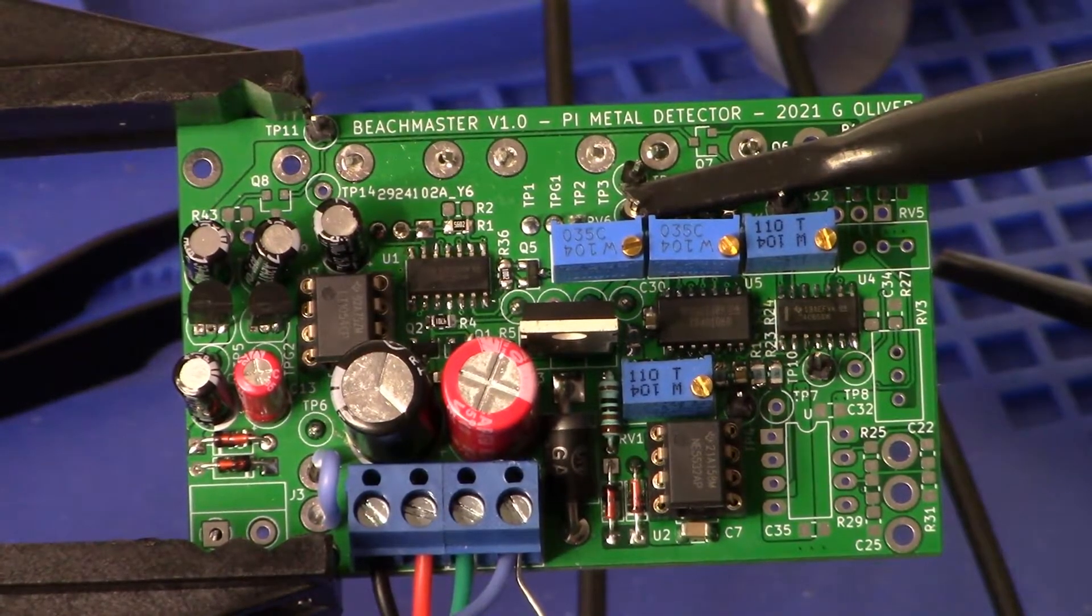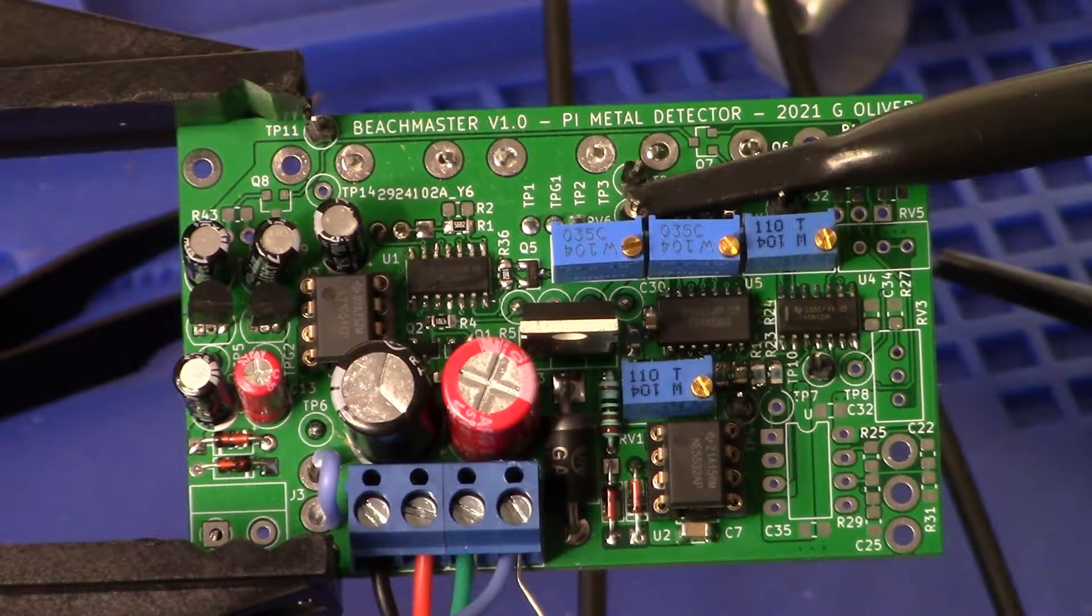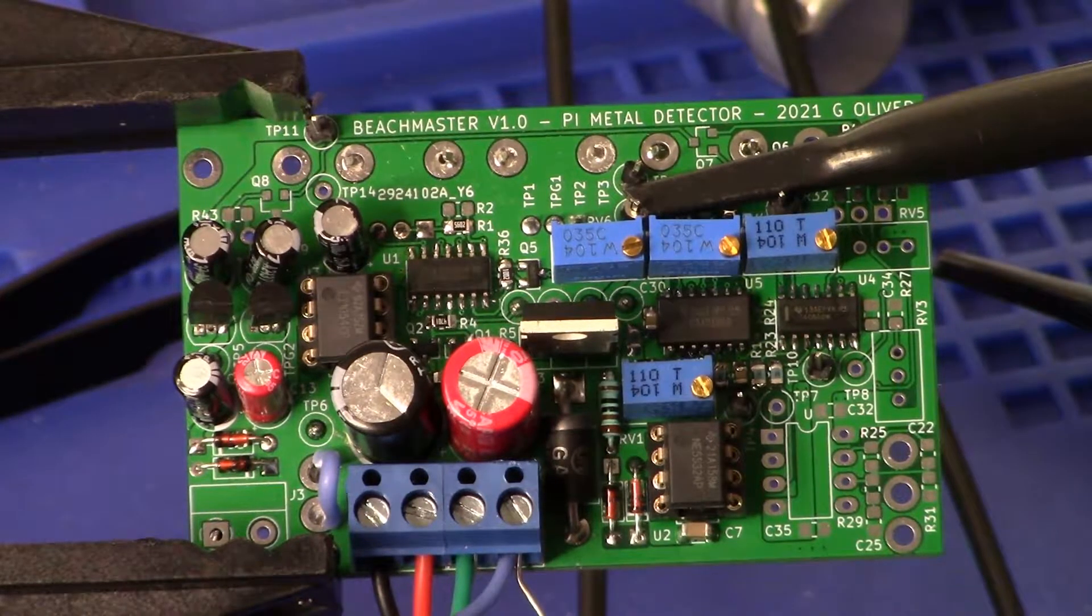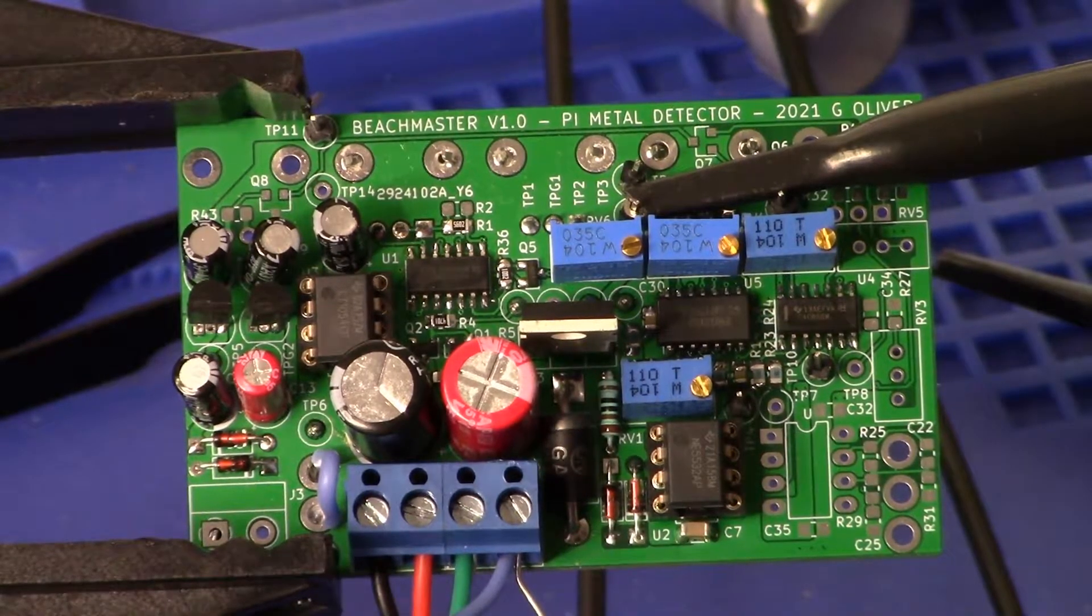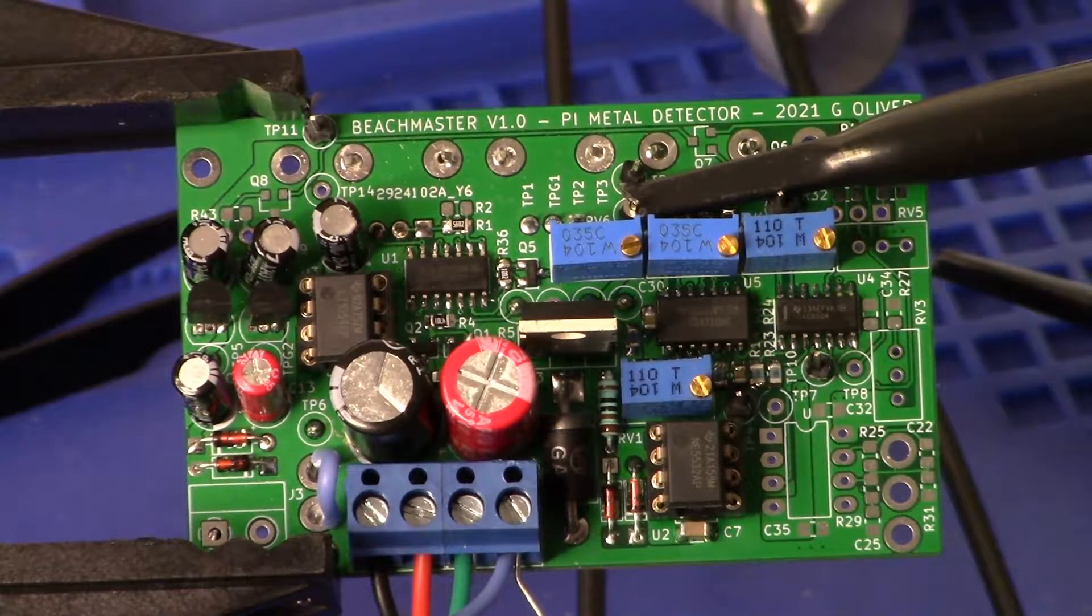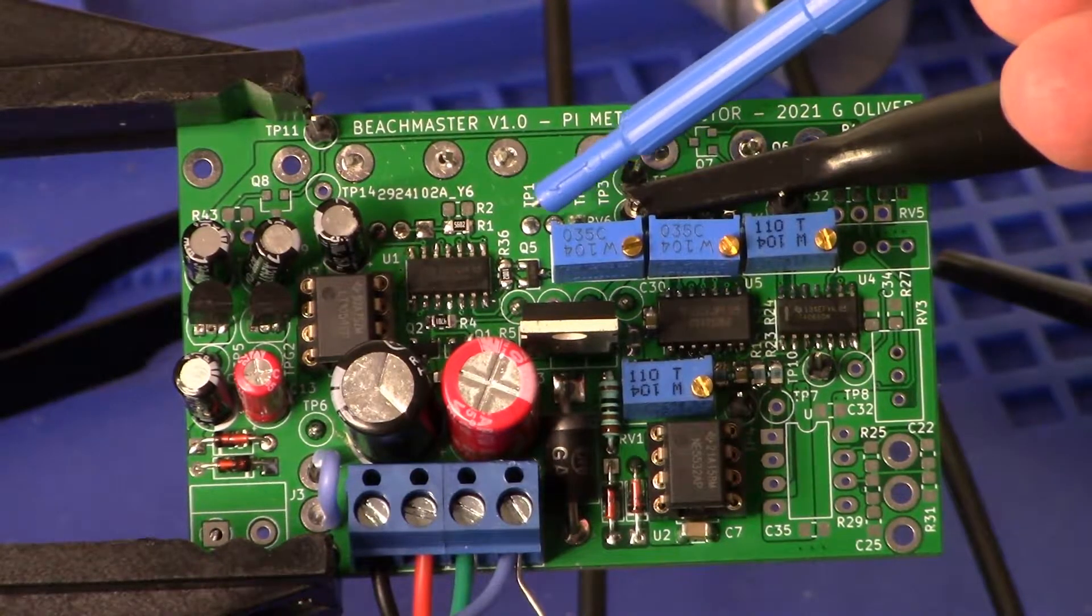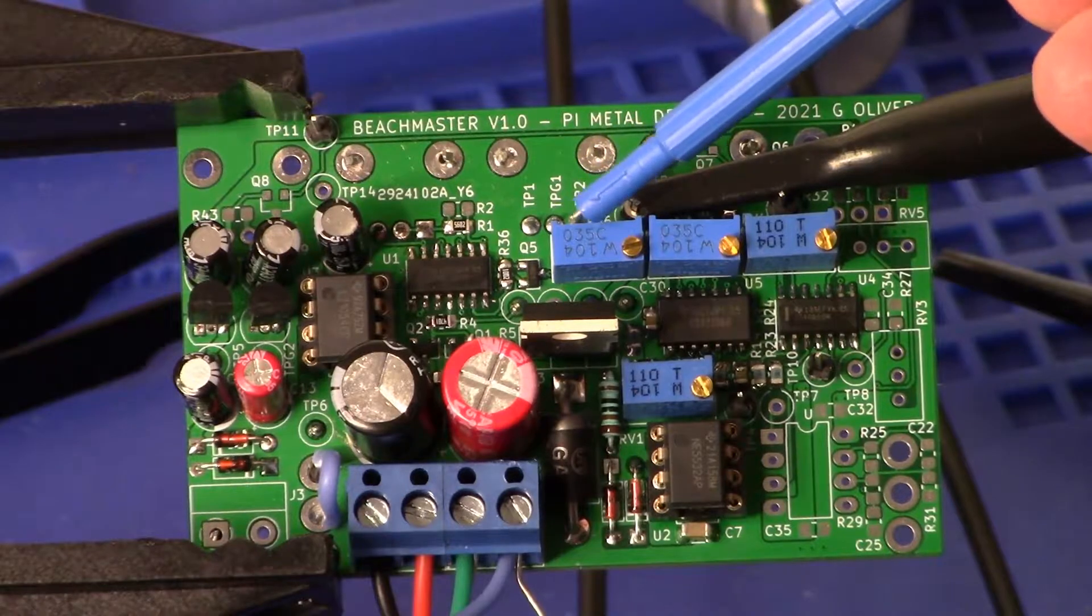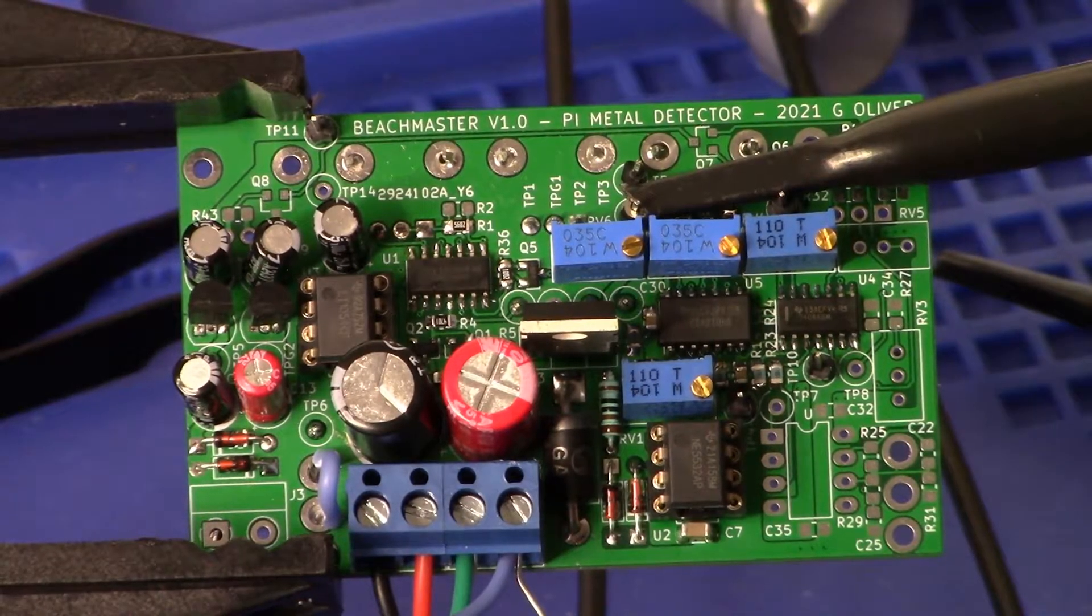Okay guys, audio frequency adjustment. Here we are, channel one probe, we are on test point number 12. To make the adjustment to the audio frequency we go to RV6, this trim pot right here. I will show you how I have it set on the oscilloscope next.